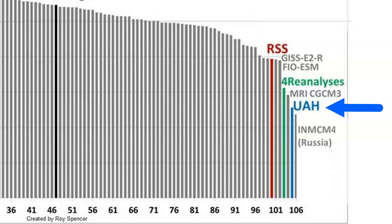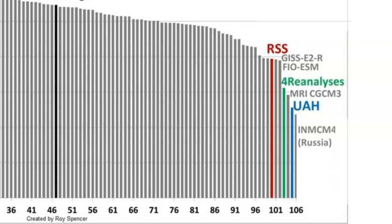The blue UAH line is satellite data generated by the University of Alabama at Huntsville. The red RSS line is also satellite data but is generated by the Remote Sensing Systems Organization located in Santa Rosa, California. The green line is the most important because it is the average of several weather balloon data sets called radiosonde data — the most accurate source of atmospheric data. Notice that when you average the two satellite data bars, UAH and RSS, you come very close to the green radiosonde line.